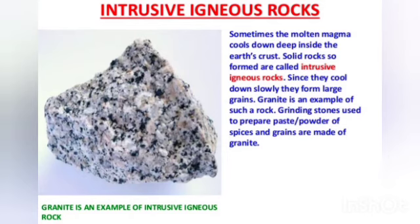Sometimes the molten magma cools down deep inside the earth's crust. Solid rocks so formed are called intrusive igneous rocks. Since they cool down slowly, they form large grains. An example of such a rock is granite. Grinding stones used to prepare paste, powder of spices and grains are made up of granite. Granite is an example of intrusive igneous rock.